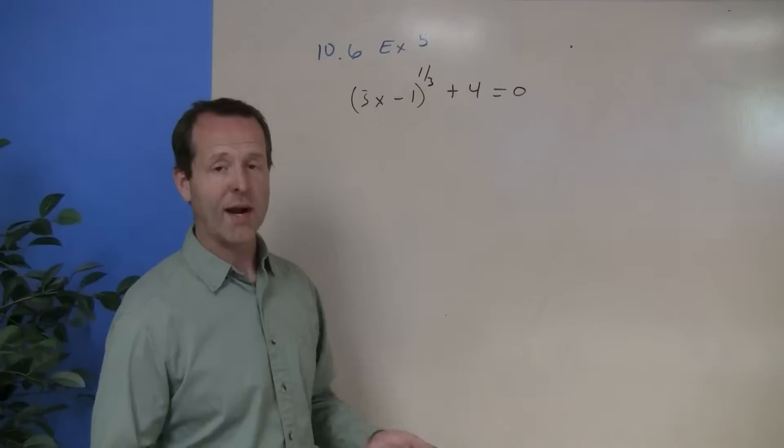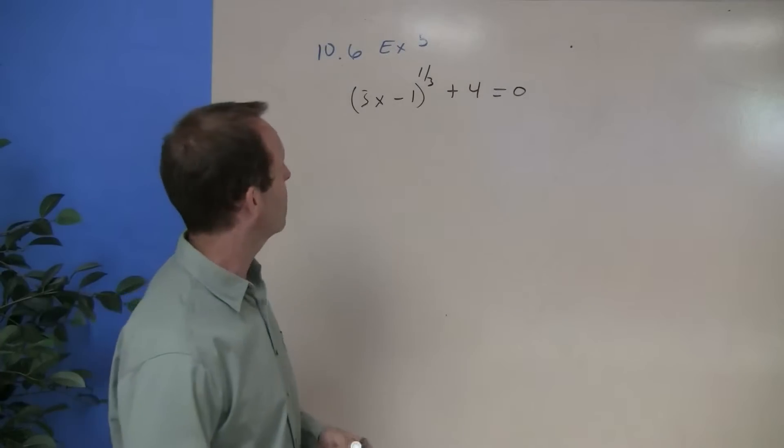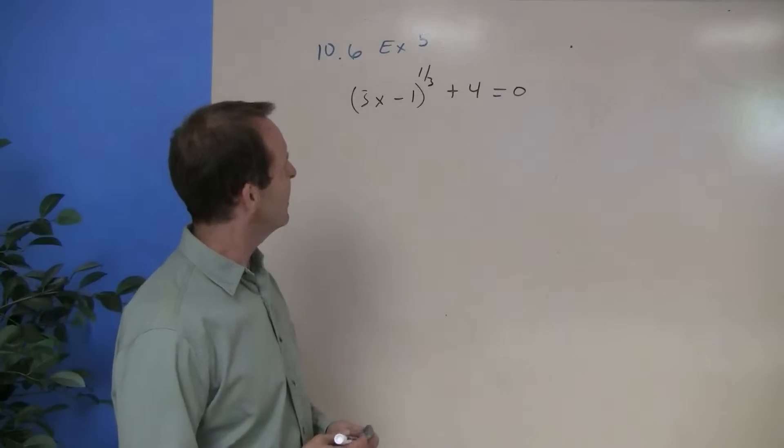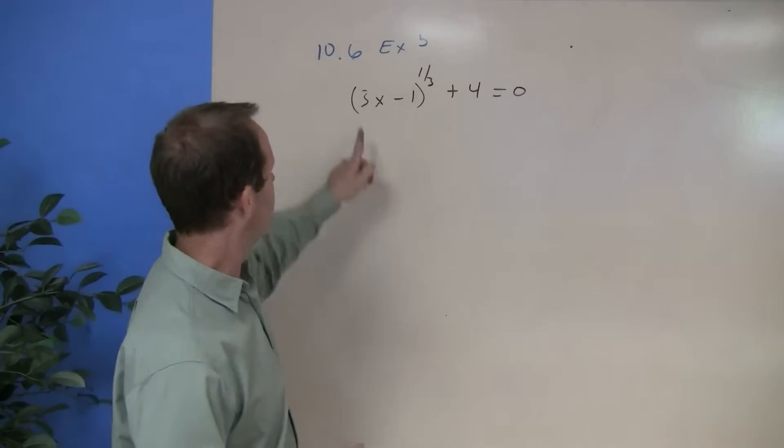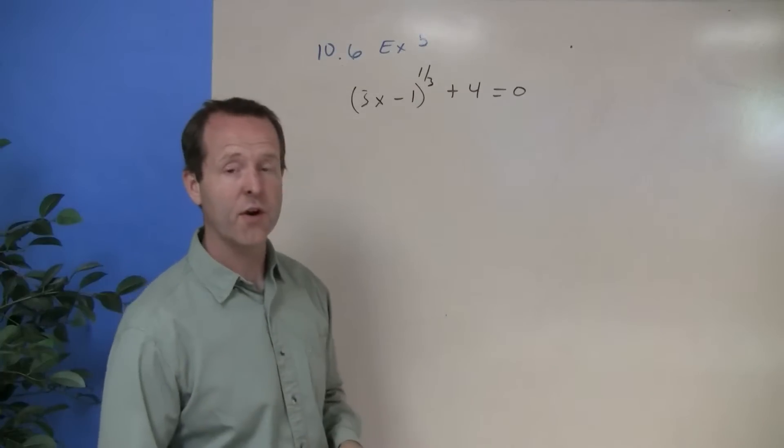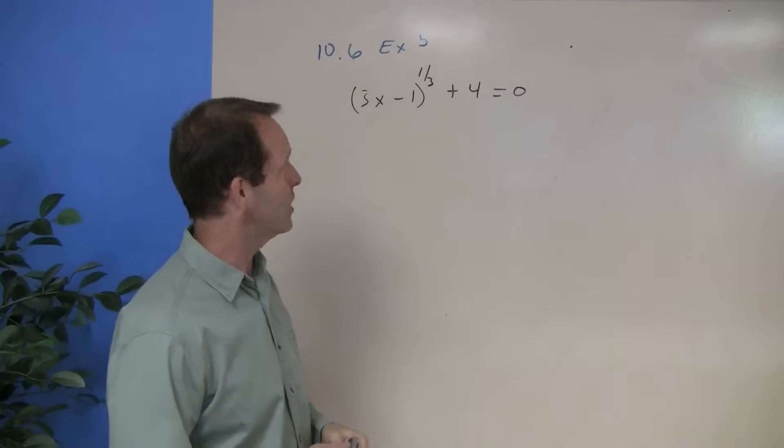Our last radical expression or radical equation I'm going to help you work through is actually one that's got a cubed root in it. The equation is 3x minus 1 to the 1/3, or the cubed root of that, plus 4 equals 0.